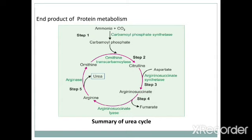The biosynthesis of urea begins with the condensation of carbon dioxide, ammonia, and ATP to form carbamyl phosphate — one molecule of ammonia condenses with carbon dioxide in the presence of two molecules of ATP, catalyzed by the mitochondrial enzyme carbamyl phosphate synthetase. This is the rate-limiting step of urea formation. In the second step, the carbamyl group is transferred to the amino group of ornithine by ornithine transcarbamylase, forming citrulline, which then leaves the mitochondria for further reactions in the cytoplasm.